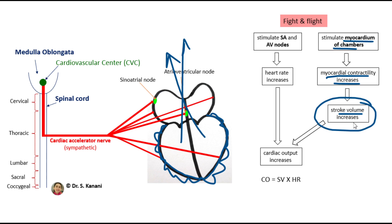In short, cardiac accelerator nerves increase both heart rate and stroke volume. And we know cardiac output equals stroke volume times heart rate. When both heart rate and stroke volume increase, that simply means cardiac output increases.